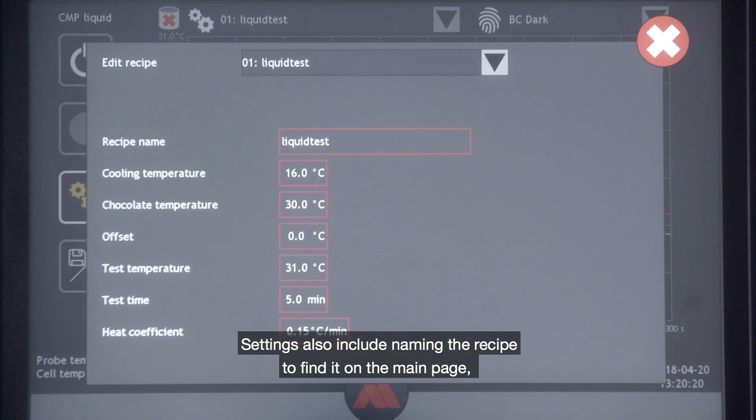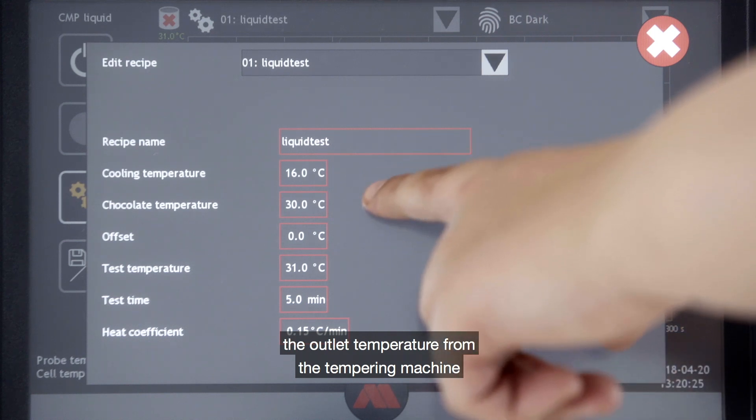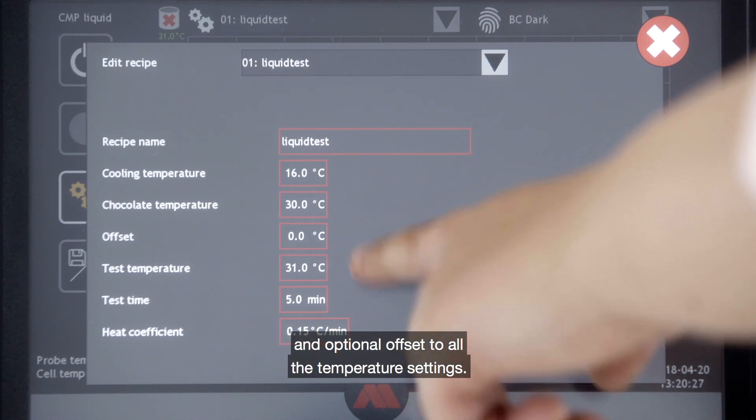Settings also include naming the recipe to find it on the main page, the outlet temperature for the tempering machine, and optional offset to all the temperature settings.